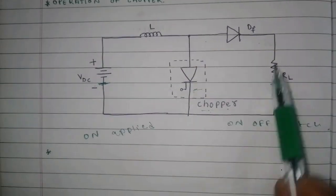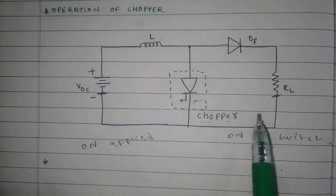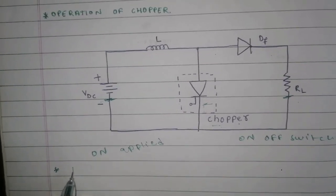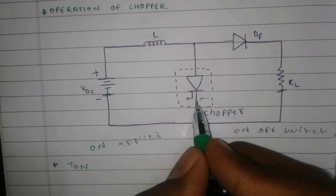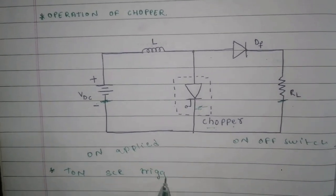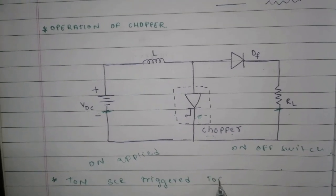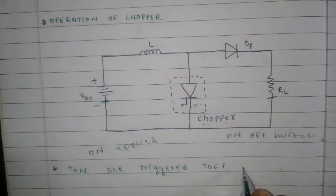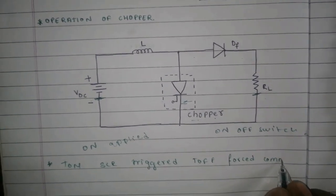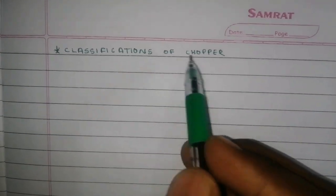This circuit provides constant output voltage from the input voltage. During the period T on, the thyristor is triggered, and during T off, the thyristor is forced commutation. Now I will explain classification of chopper.